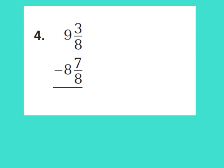I'm going to take away a whole from my 9 wholes and make it 8 wholes. Because I took away a whole, I can make a whole — I'm going to add a whole to my 3 eighths. The whole I will add is 8 eighths, so 8 eighths plus 3 eighths is 11 eighths. Now this is really just 11 eighths. So now I can subtract: 11 eighths minus 7 eighths is 4 eighths. Then 8 minus 8 is 0, so my answer would be 4 eighths, also known as 1 half.